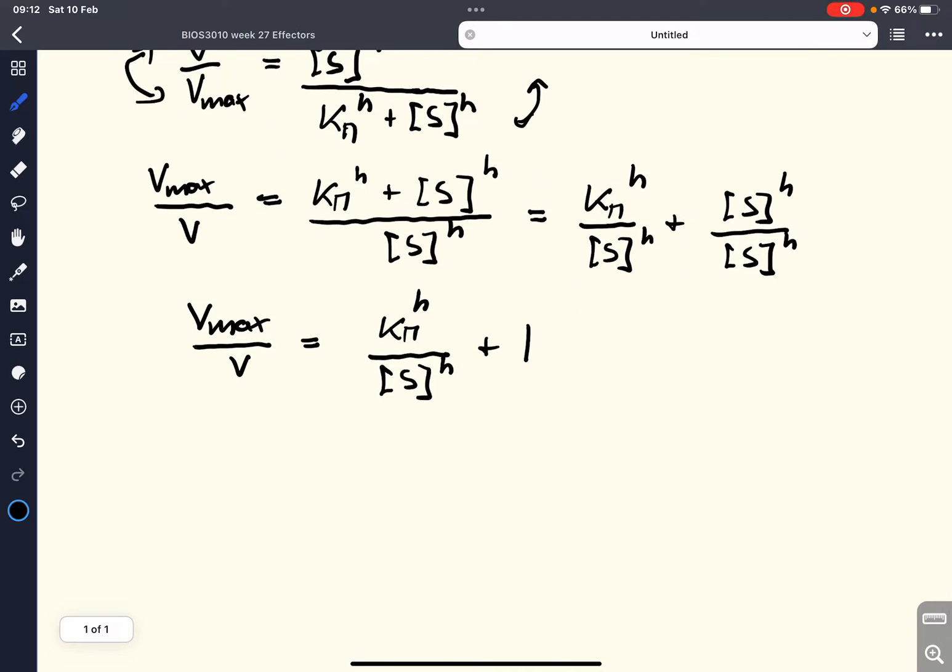Now, we bring the 1 to the other side and we get Vmax over V minus 1. And instead of writing Vmax over V minus 1, we can also write Vmax minus V divided by V.